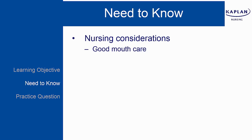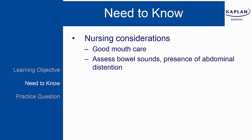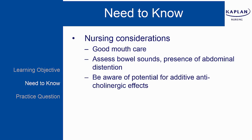Additional nursing considerations include providing good mouth care for your client because of the dry mouth they commonly experience. You need to assess their abdomen because of the effects anticholinergics can have on GI motility. Constipation is a risk, so include preventative measures such as pushing PO fluids and ensuring plenty of fiber in their diet. Be aware of the potential for additive anticholinergic effects if the client is administered another medication with anticholinergic activity, such as certain antihistamines or antidepressants.